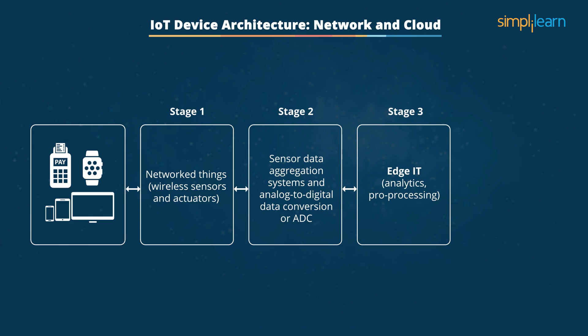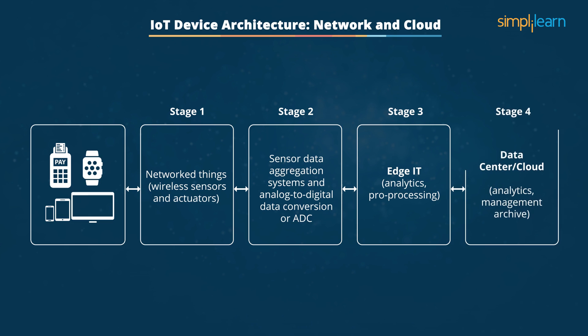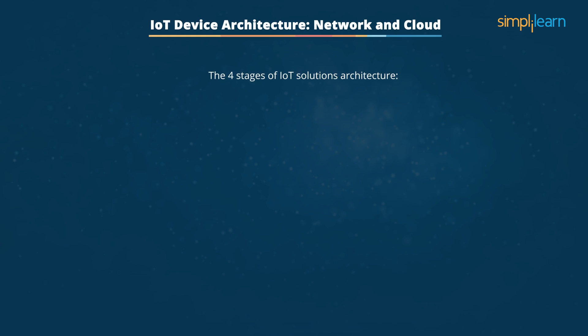IoT Device Architecture: Network and Cloud. There are four stages of integrating the different IoT processes. Stage one: network things — wireless sensors and actuators. Stage two: sensor data aggregation systems and analog-to-digital data conversion. Stage three: the appearance of edge IT systems. Stage four: analysis, management, and storage of data. As these stages evolve, the devices, the network, and the cloud application must be leveled equally in the ecosystem for better stability and security.